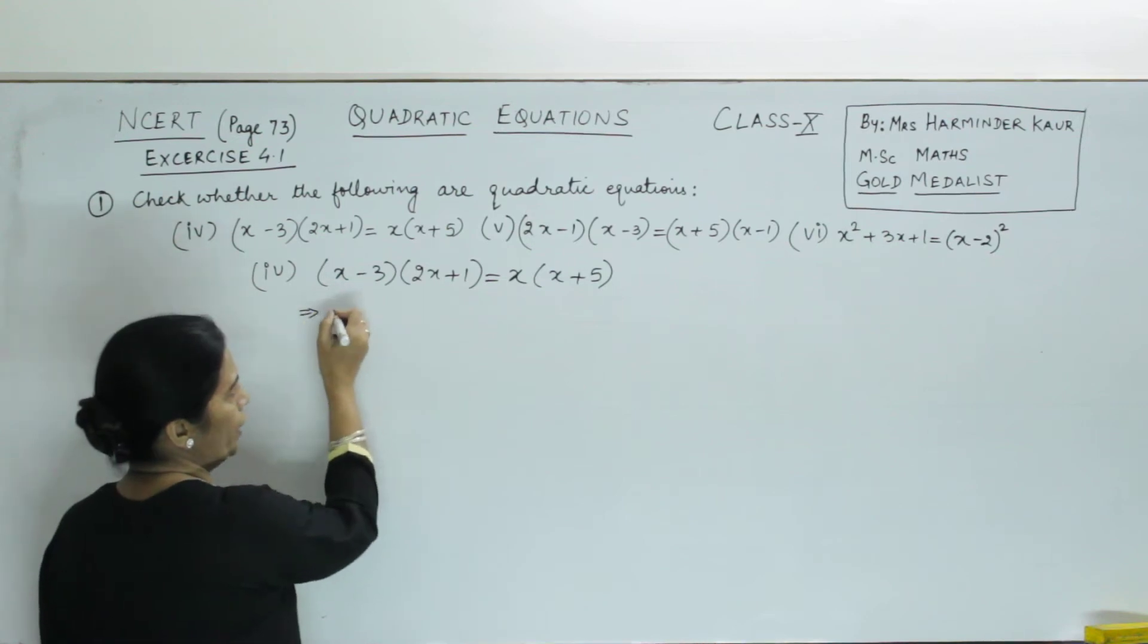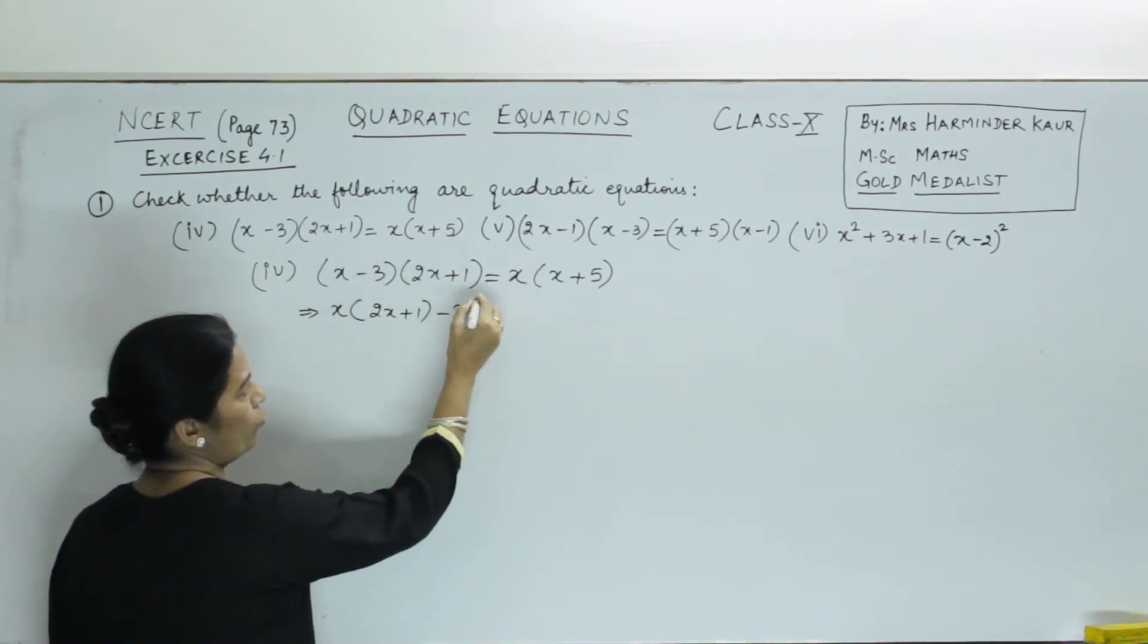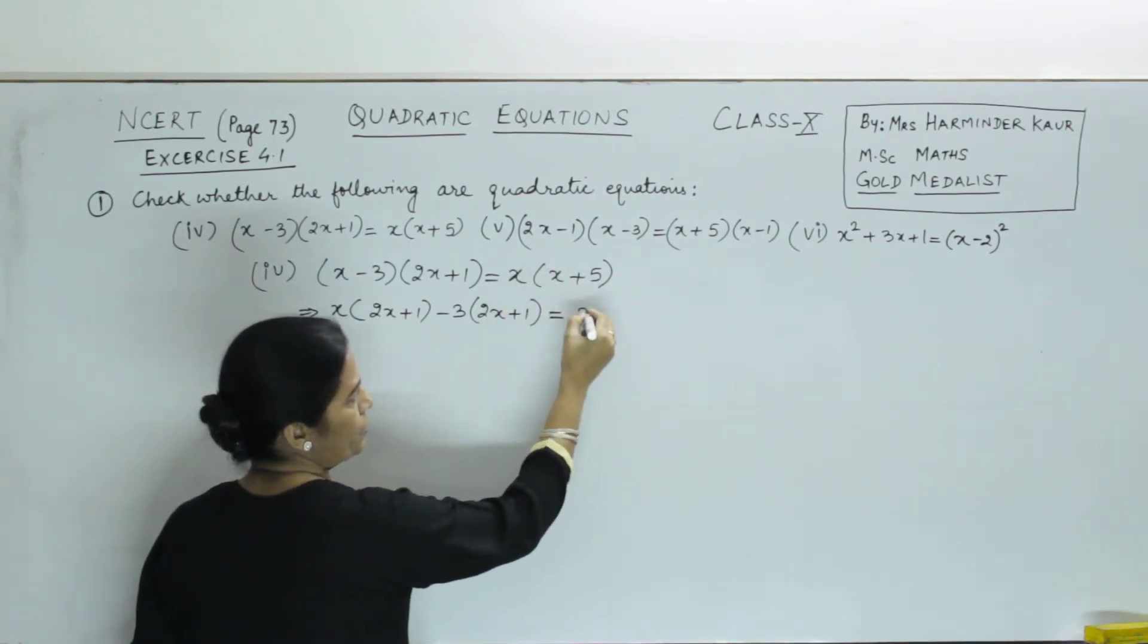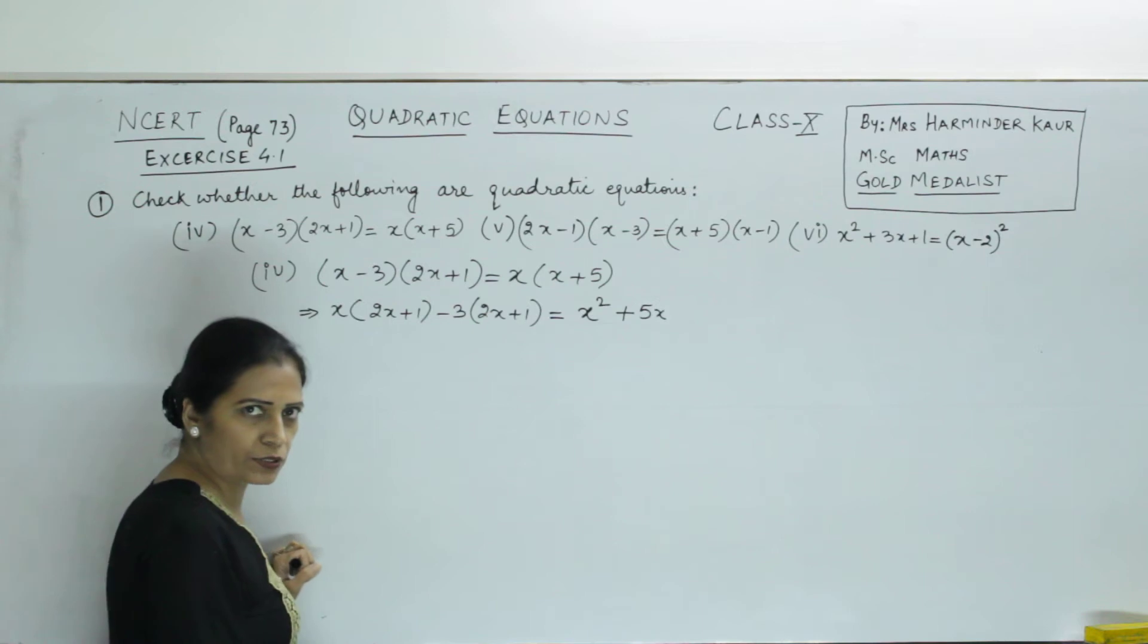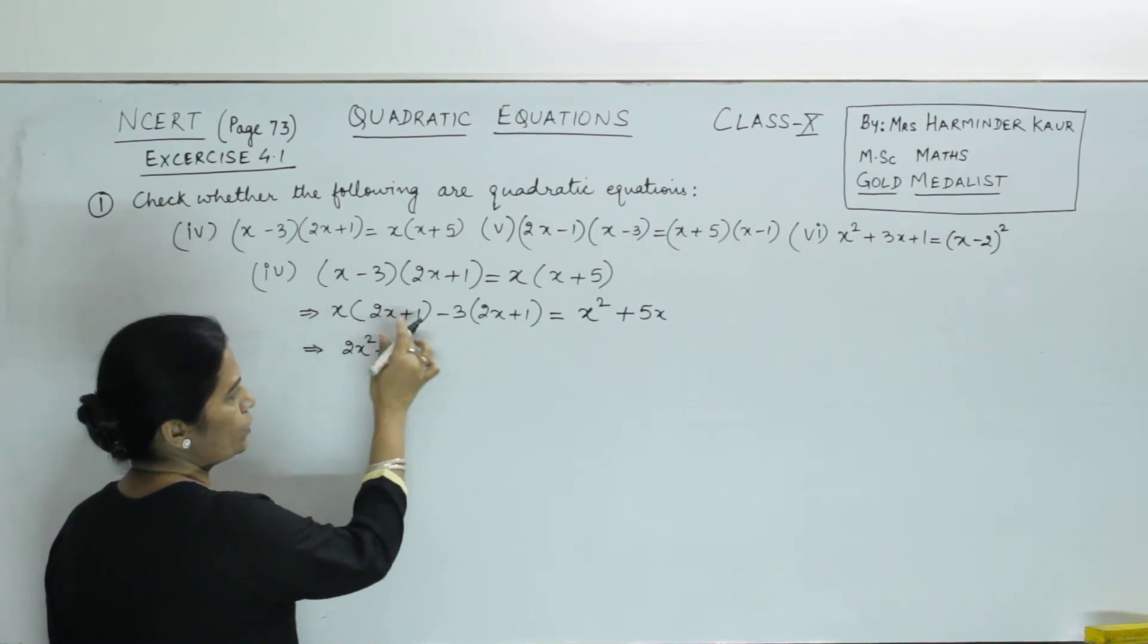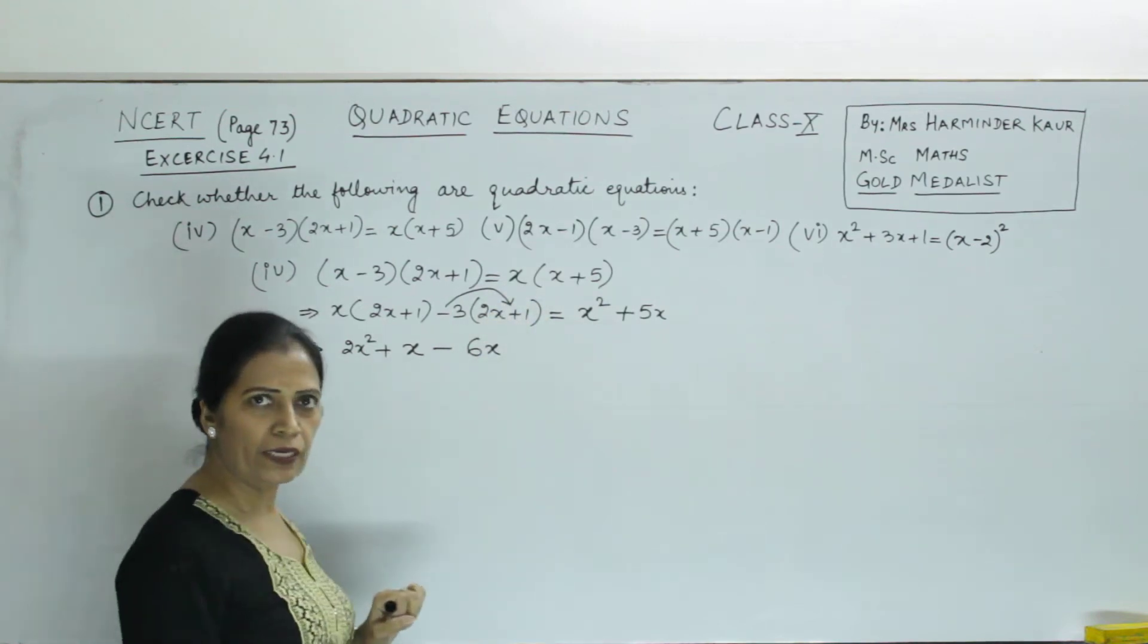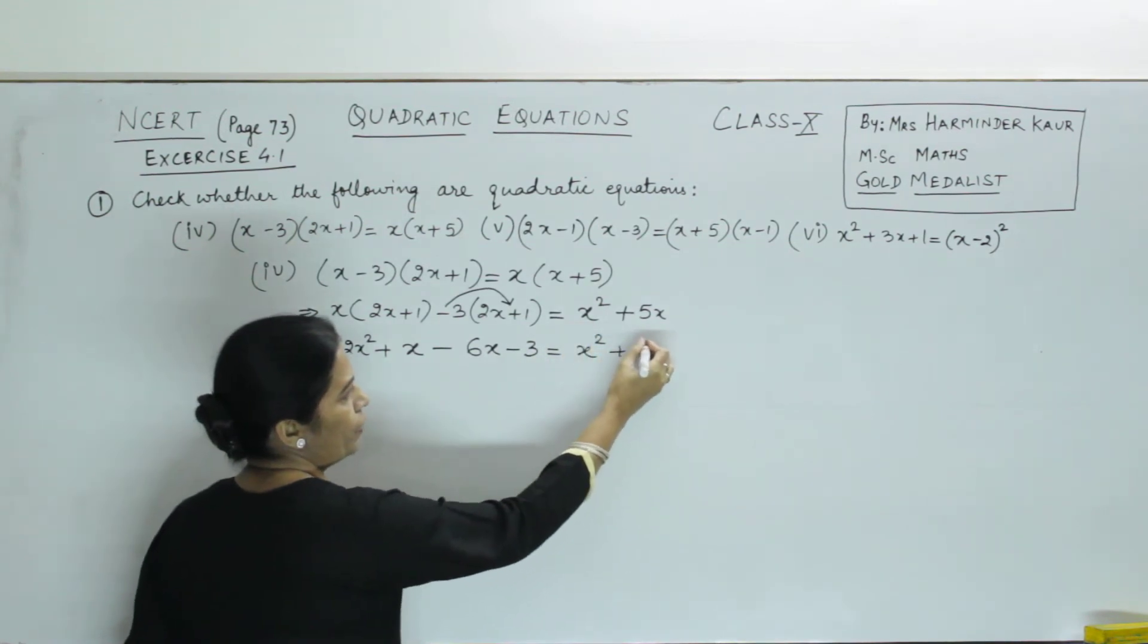Bracket open and we will assess whether it is quadratic or not. So bracket open here, x into 2x plus 1. Then this minus 3 is multiplied with 2x plus 1. Is equal to, this x directly, we have bracket open here. x into x, it becomes x squared. x into 5, it is 5x. And in between, sign will be positive. Now, this x is multiplied here. So it is 2x² + x into 1, it becomes x. Minus 3 into 2x, so minus 6x.